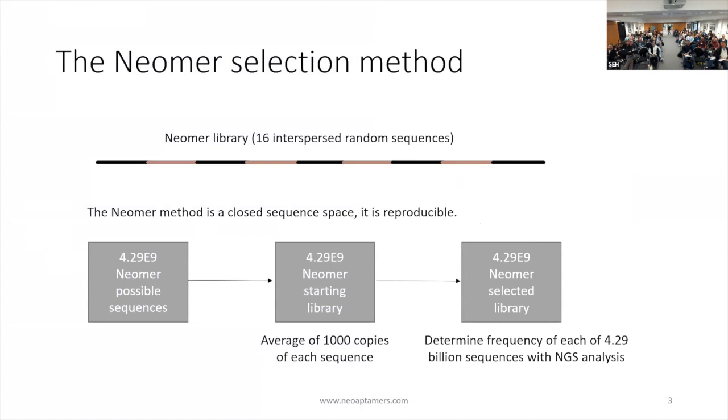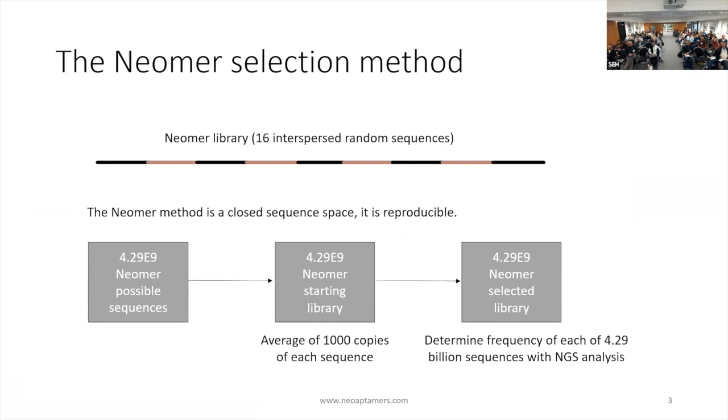Just to review the Neomer selection method: one of the issues with SELEX is your random region is so large. You have so many possible sequences. When you're starting with a quadrillion, you're starting with one copy of each. You have to do PCR to get enrichment, and that means every time you're getting a new target, you're using a new initial library. The other side is, as a company, what we're really engaged with is getting aptamers to work in matrix. That's the biggest constraint in the aptamer world. One of the biggest differences between aptamer development and antibody development is immune tolerance.